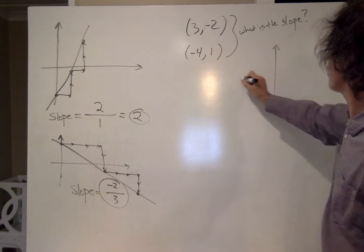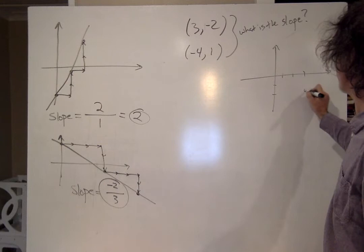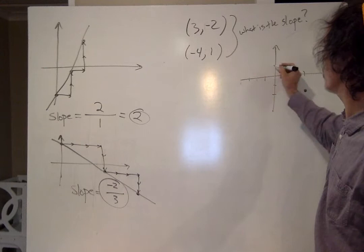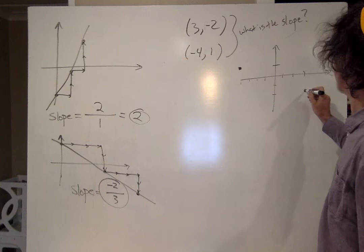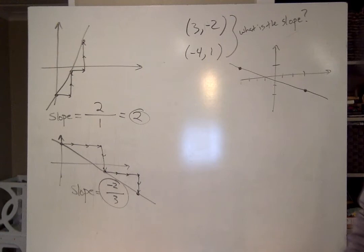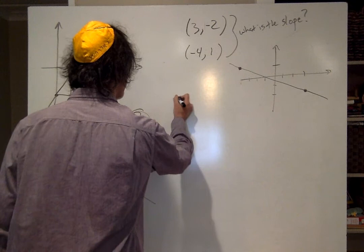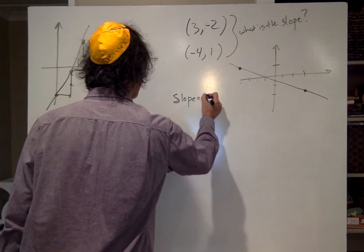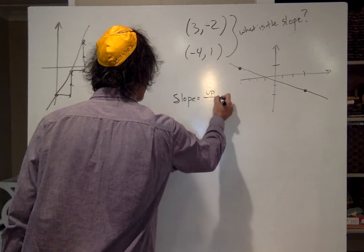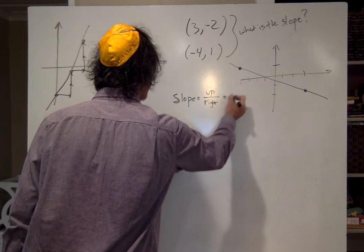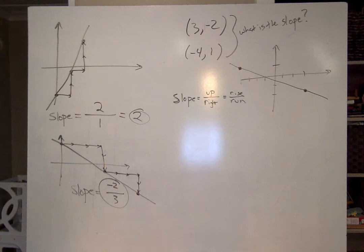First, I'm just going to plot them out just to see. 1, 2, 3, 1, 2. There's the point 3, negative 2. 1, 2, 3, 4, 1. There's the point negative 4, 1. Looks like my slope's going to be negative. I said the slope equals how far I went up over how far I went to the right, or, as they like to say, the rise over the run.